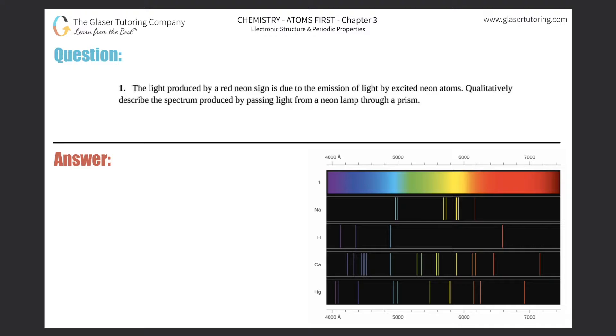Number one, the light produced by a red neon sign is due to the emission of light by excited neon atoms. Qualitatively describe the spectrum produced by passing light from a neon lamp through a prism.